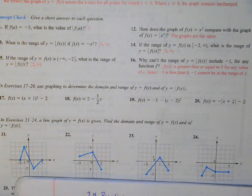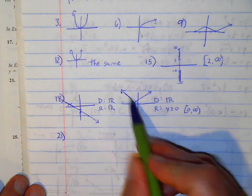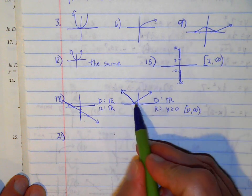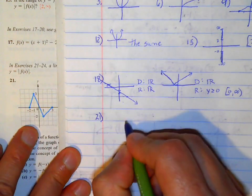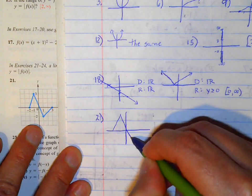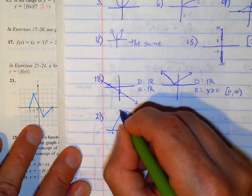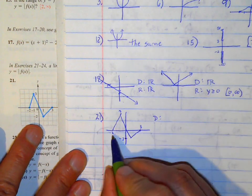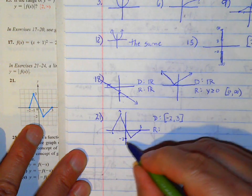Number 21. A graph of the line is given — find the domain and range of f of x. Our graph goes to negative 2 on one end and up to 3 on the other. So the domain of the original graph goes from negative 2 to 3, and the range also goes from negative 2 to 3.